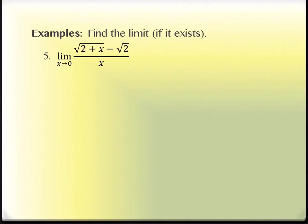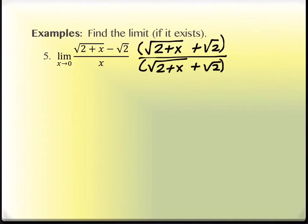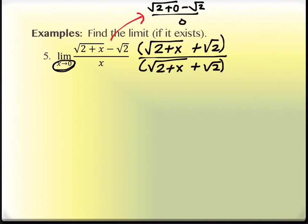Now let's look at what happens when we have a radical. Radicals can be rationalized — turned into something without radicals — by working with conjugates. First, let's evaluate at x equals 0 to make sure we actually get 0 over 0. Plugging in 0 for x, we do in fact get 0 over 0, so yes, we need to multiply by the conjugate. The conjugate of the numerator would be the square root of 2 plus x plus the square root of 2.